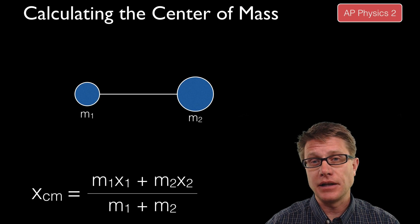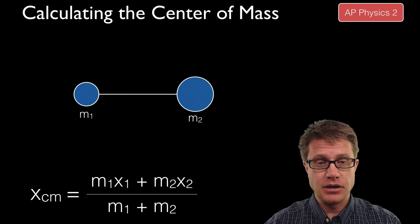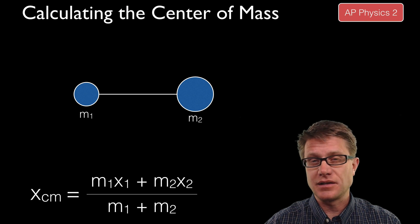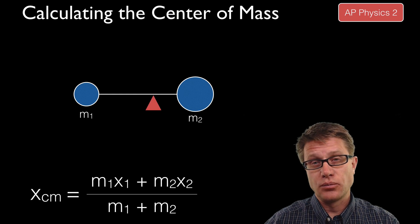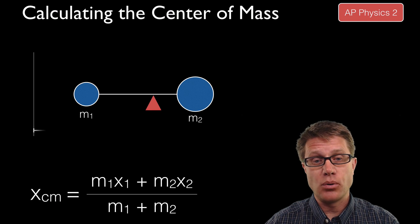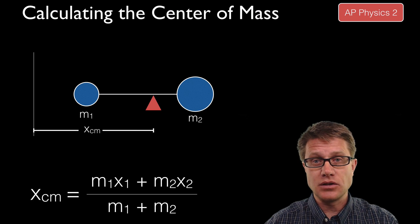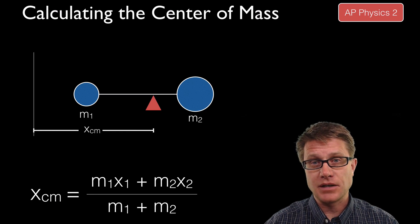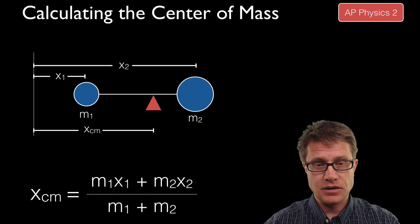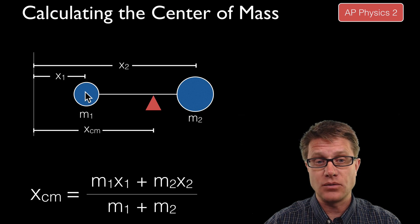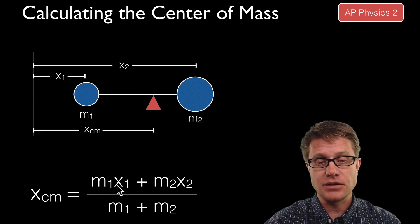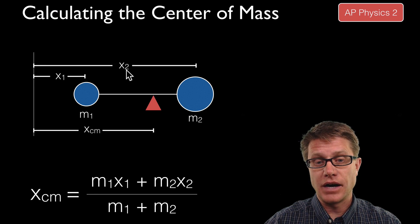As you move into AP Physics, you will have to calculate where that center of mass is. If we have two masses connected with a massless bar, here is the formula. You find the point where you could balance the object. Set up an arbitrary distance x from your reference point — that is xcm, the center of mass. x1 is the distance to the center of mass of mass 1, and x2 is the distance to mass 2. Multiply mass 1 times x1, add mass 2 times x2, then divide by the sum of the two masses.